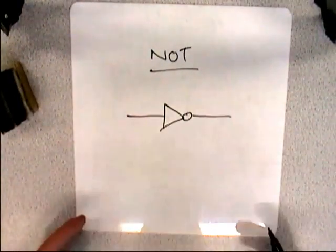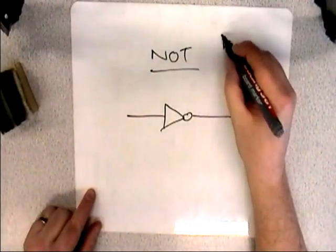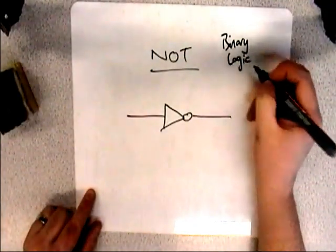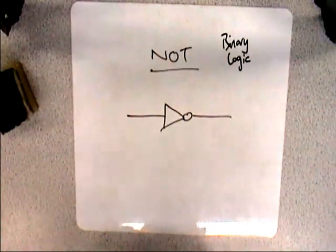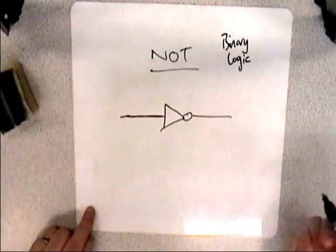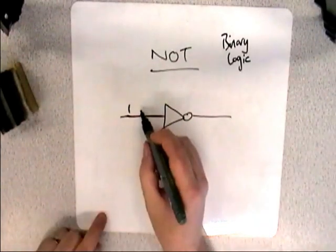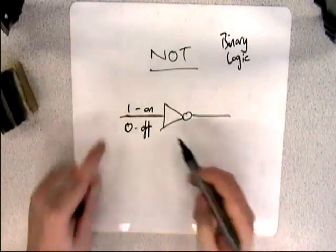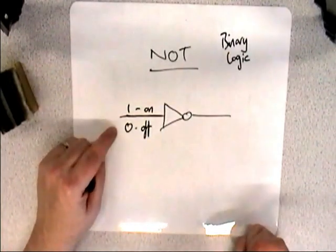And a NOT gate looks like this, it's a triangle with a circle on the end. And the logic here, because remember the thing at the start we said was it's binary logic. What does that mean? Well, binary is in terms of twos. And it's in terms of twos because this is an electrical signal, it's a cable, and it's either on or it's off.